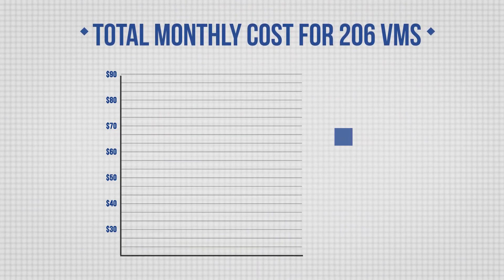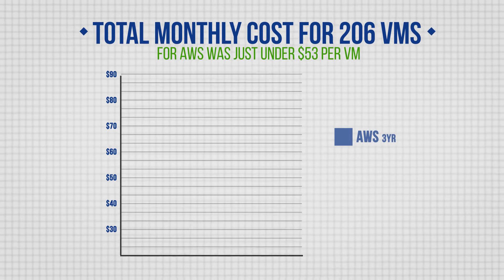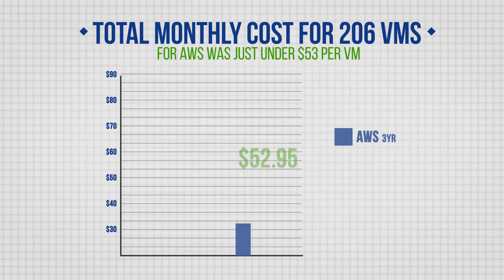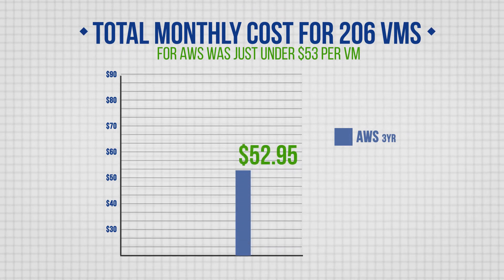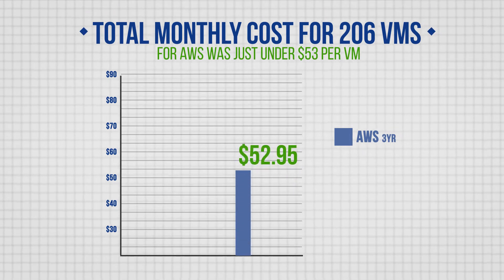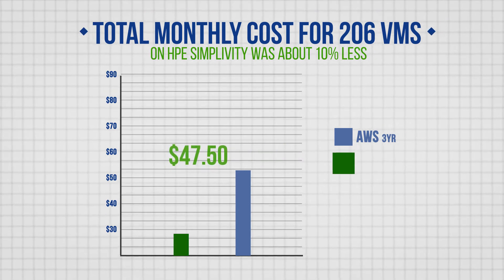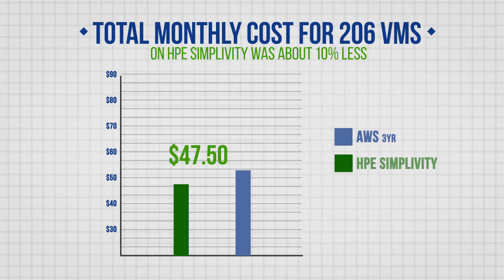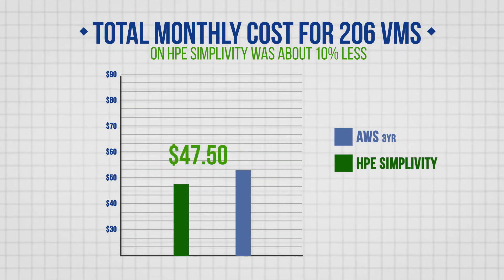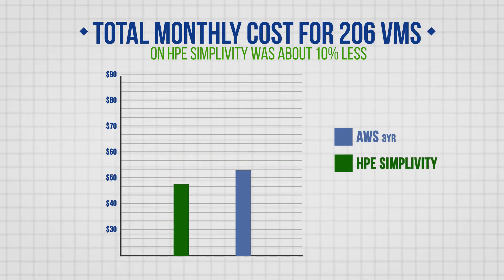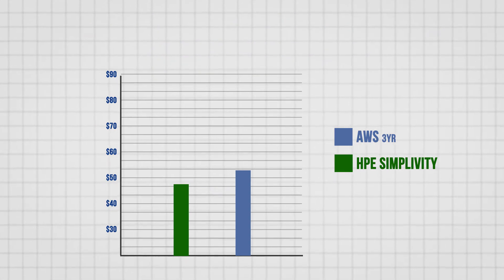For AWS, the total monthly cost for our 206 VMs was just under $53 per VM. The total cost for 206 VMs on HPE SimpliVity was about 10% less, or $47.50 per VM. Not a huge difference, but it does mean the basic cloud assumption is in error.